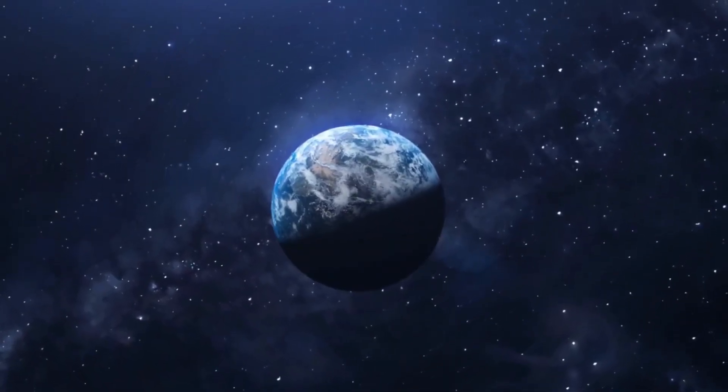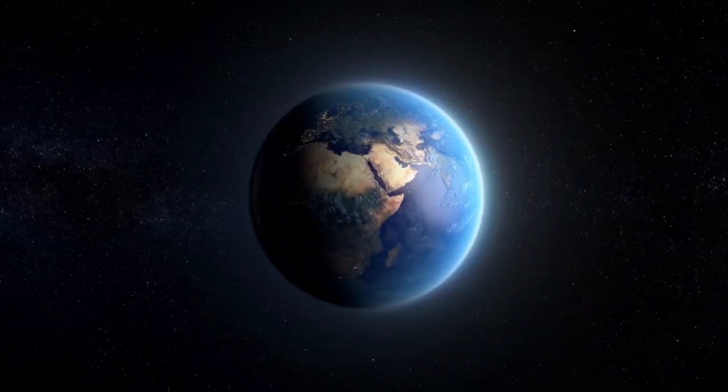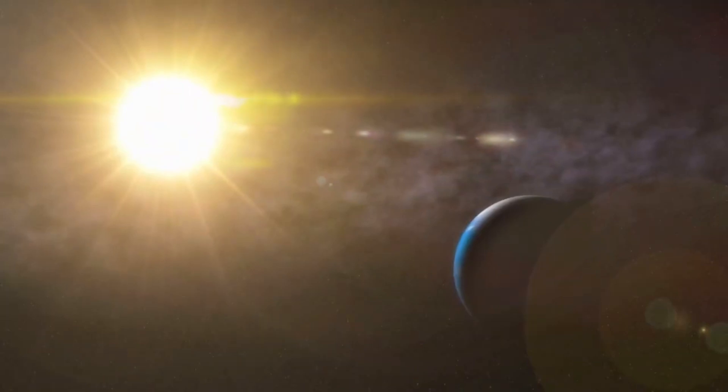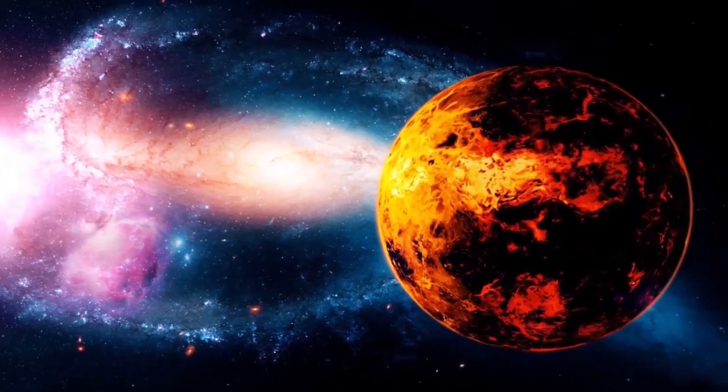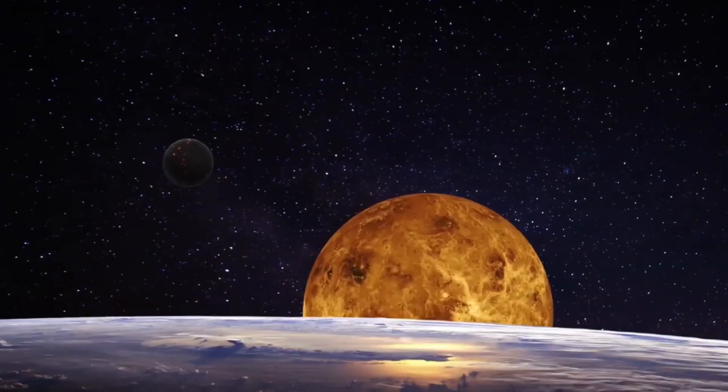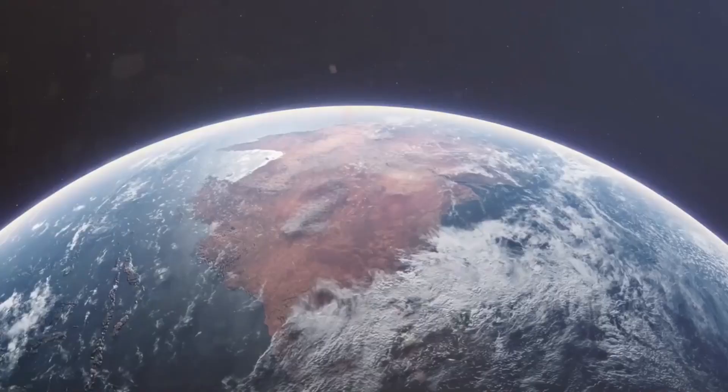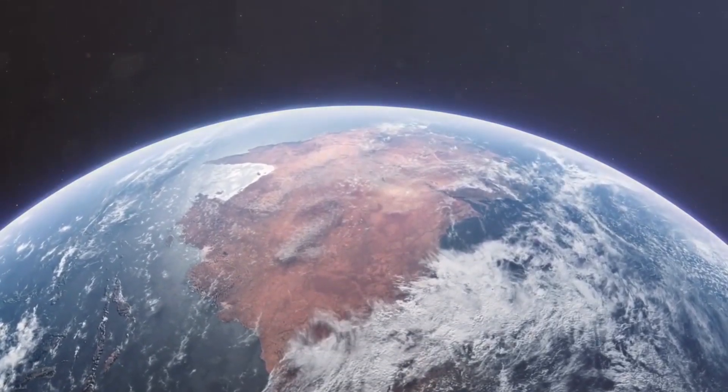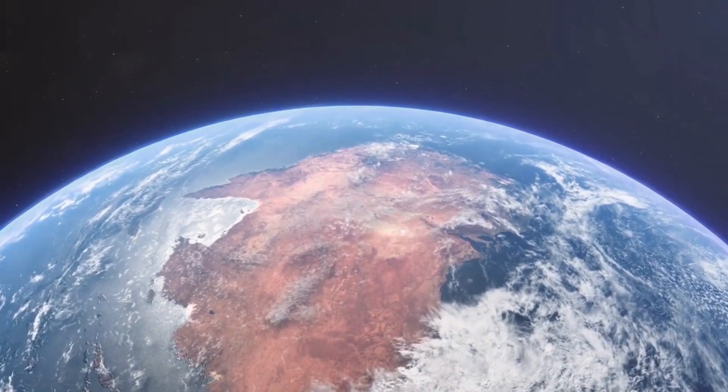By studying the planet's atmosphere, scientists gained insight into its history and formation. It's believed that the planet took shape through the collision of smaller celestial bodies known as planetesimals. Despite its current proximity to its star, the planet originally formed much farther away. This is inferred from the fact that it has more oxygen than carbon in its atmosphere.